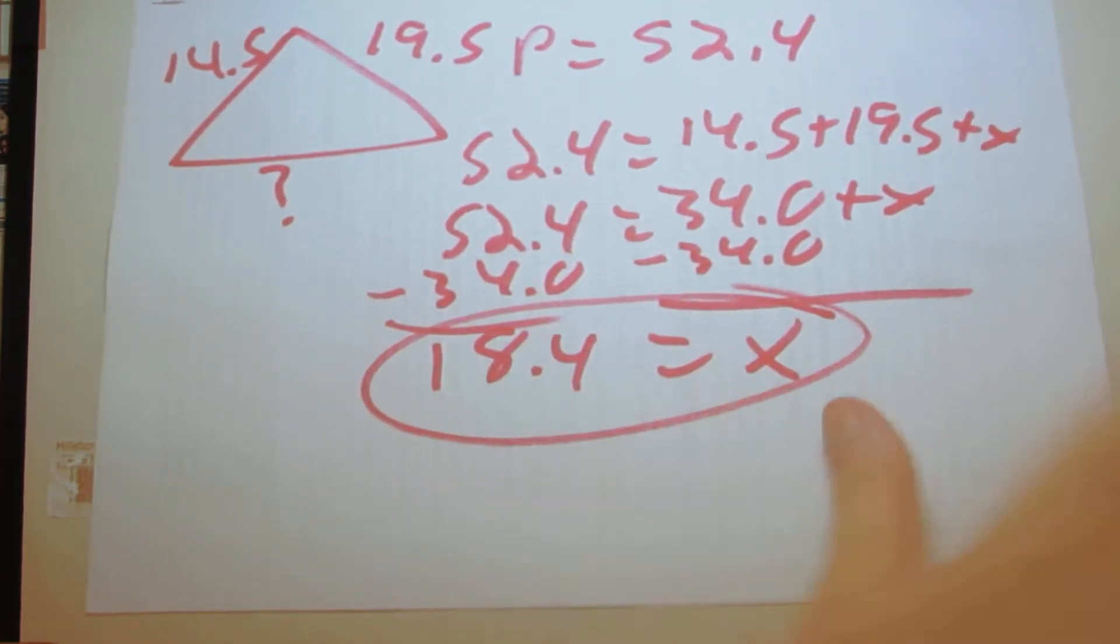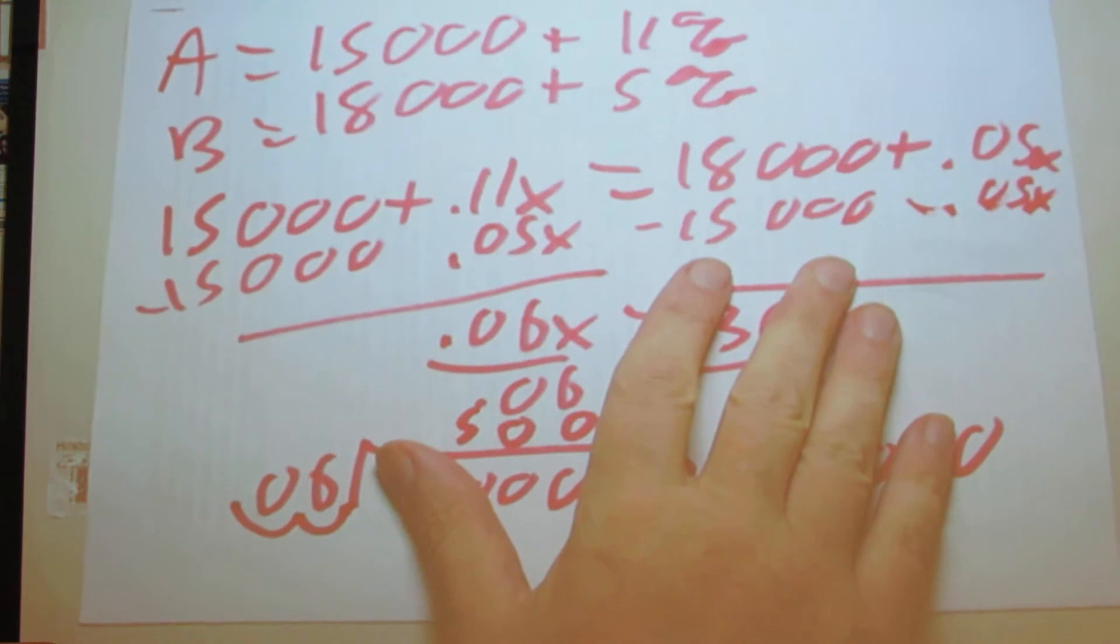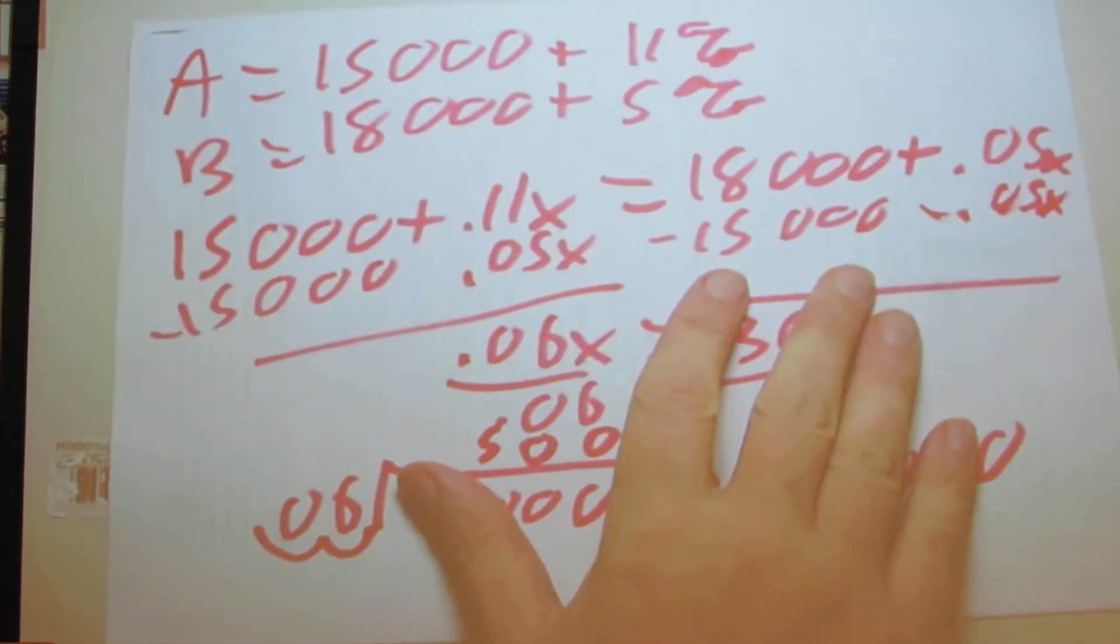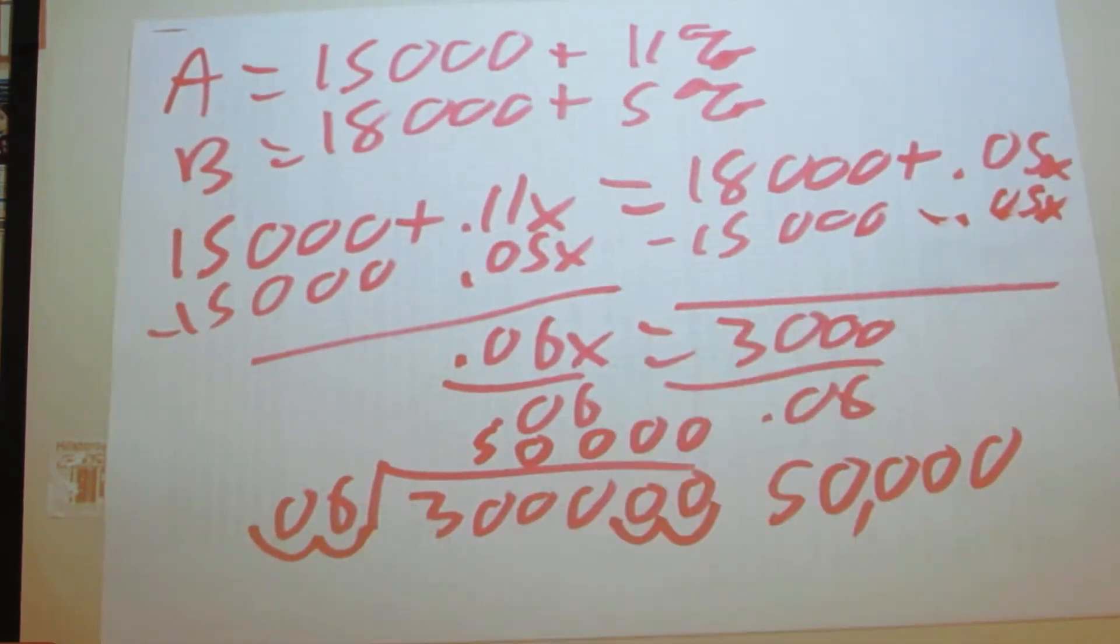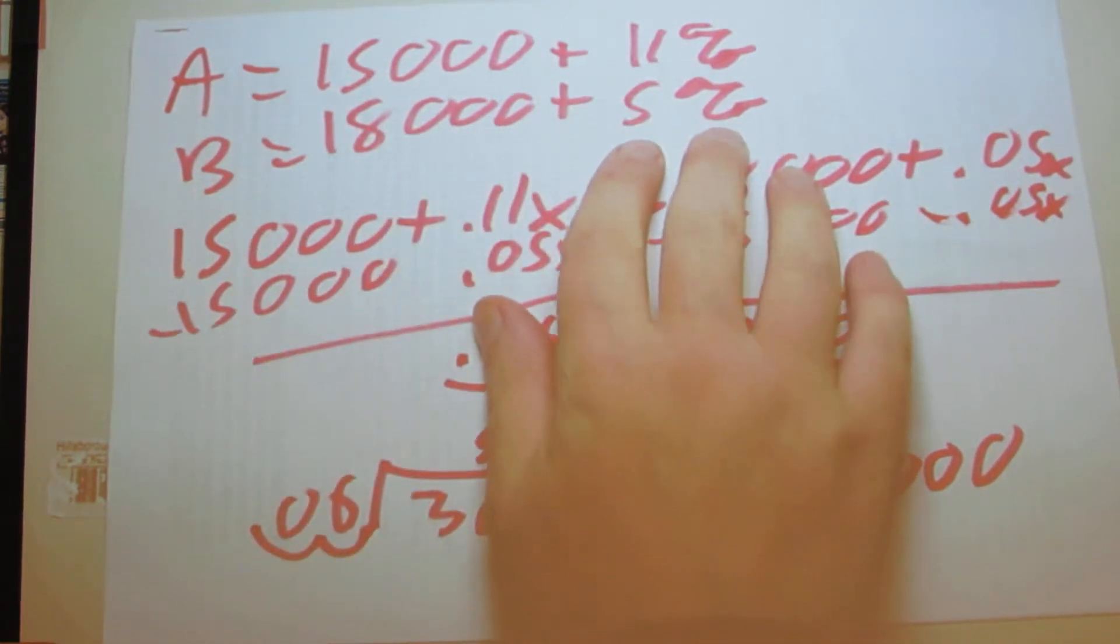The last question is where there are two options that you can choose for your pay. One is a base salary of $15,000 a year with a commission of 11% of your sales. The other is $18,000 per year base with a commission of 5%, and it's asking where will option A start to be as good as or better than option B.